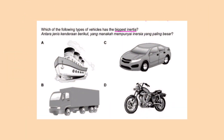The last question asks which of the following types of vehicles has the biggest inertia. Just like I've mentioned, inertia is only affected by the mass of the object. So to find the vehicle with the biggest inertia, you have to find the vehicle with the biggest mass. Therefore, the answer to this question is A, since it is the heaviest and has the biggest mass.